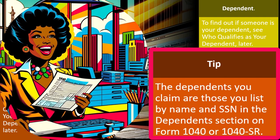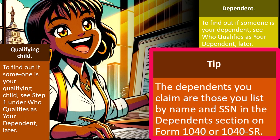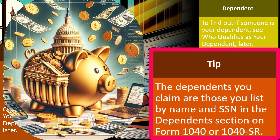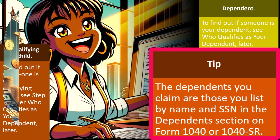If you have custody questions about a dependent, problems arise when two parents claim the same dependent, because the IRS will see the Social Security number on two different returns and only one person can get the dependency benefits. In practice, the person who files first will have their return processed more easily, since that dependent's SSN hasn't been used yet, while the second filer's tax software may kick the return back.